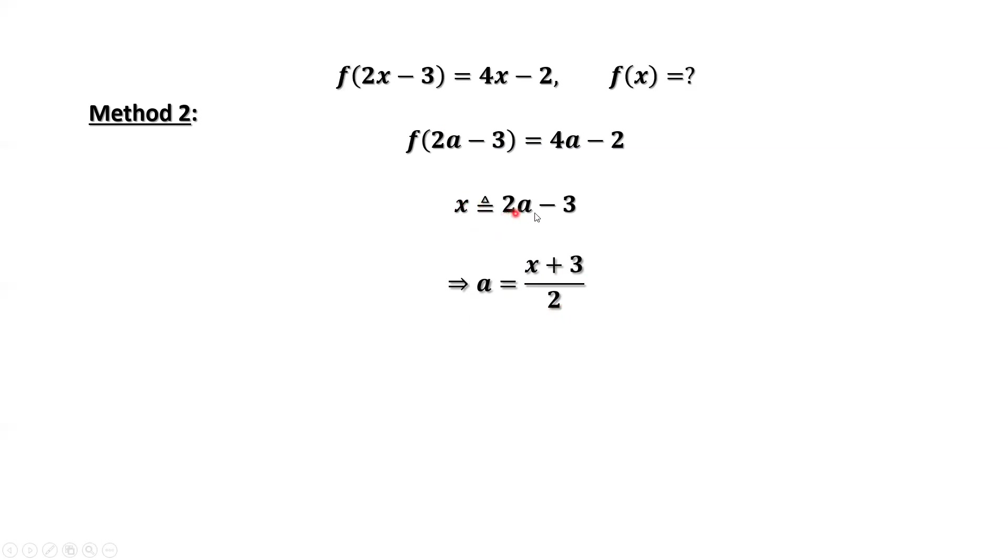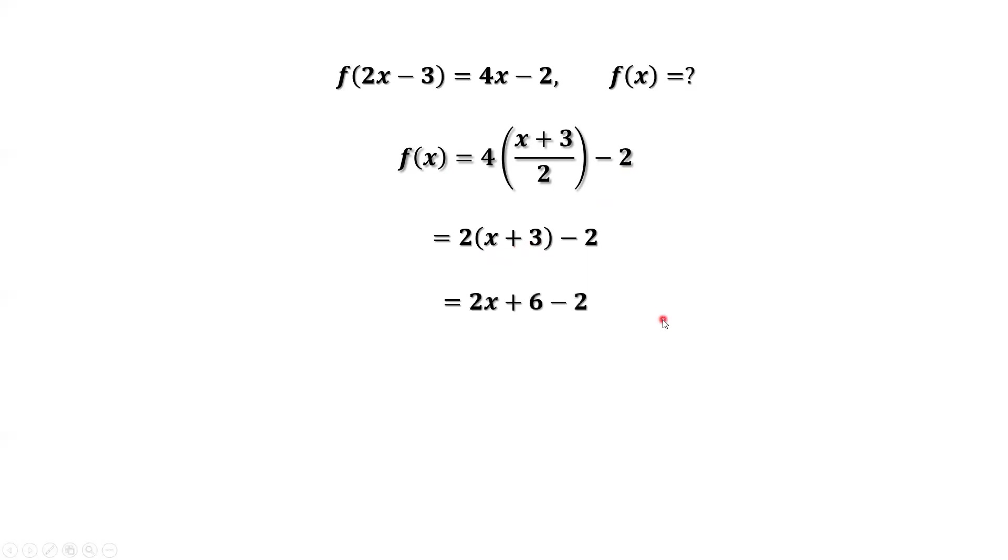Replace 2a minus 3 here by x. We have f of x and replace a in terms of x. Simplify the right-hand side. We have f of x equals 2 times x plus 3, then minus 2. Continue to simplify. We have f of x equals 2x plus 4.